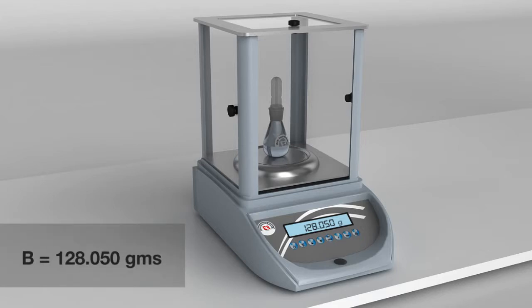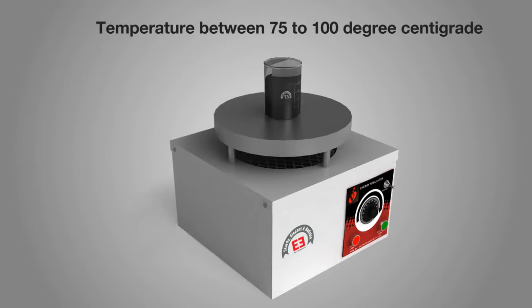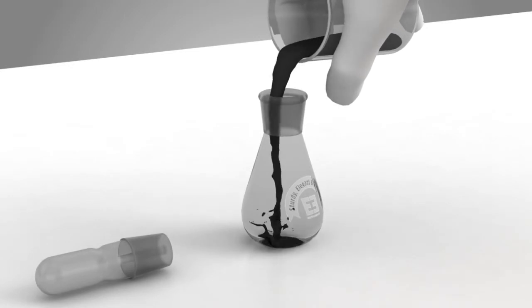Now the bitumen is heated to a pouring temperature between 75 degrees centigrade to 100 degrees centigrade and poured up to half in the clean and dried bottle.